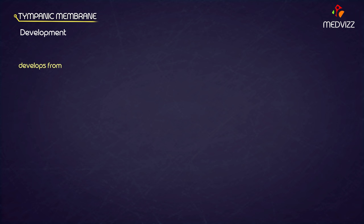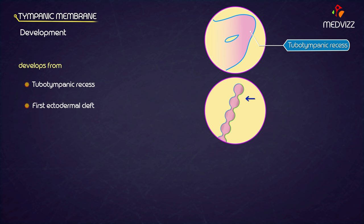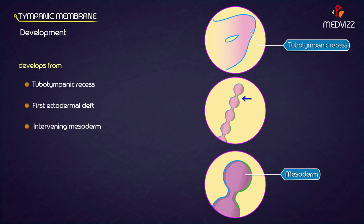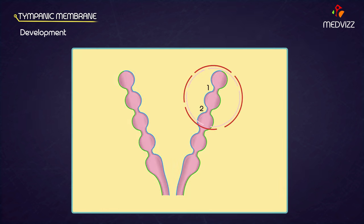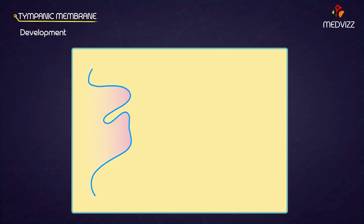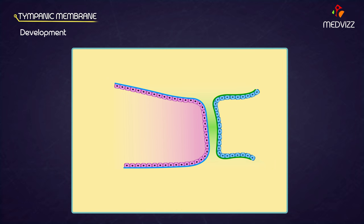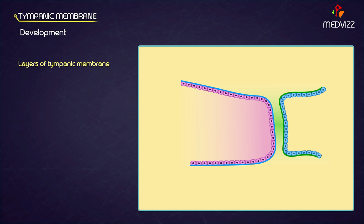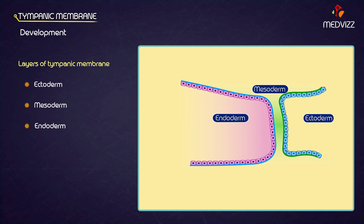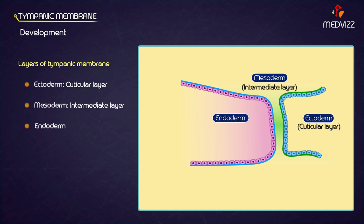Development. The tympanic membrane develops from the tubotympanic recess, the first ectodermal cleft, and the intervening mesoderm. The tubotympanic recess is formed by the union of the first and part of the second pharyngeal pouch. This then opposes the first ectodermal cleft with mesoderm lying in between. Hence, the tympanic membrane consists, from superficial to deep, of three layers derived from ectoderm, mesoderm, and endoderm, corresponding to the cuticular layer, intermediate layer, and mucous layer respectively.